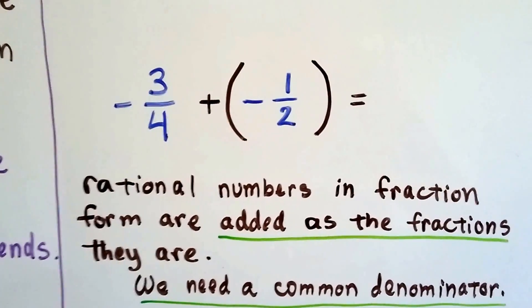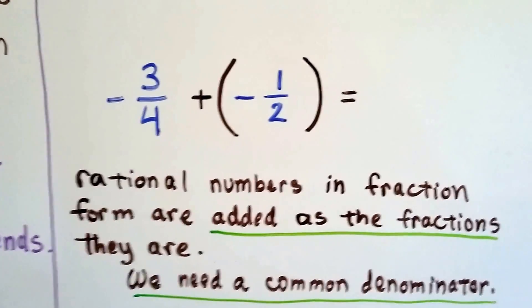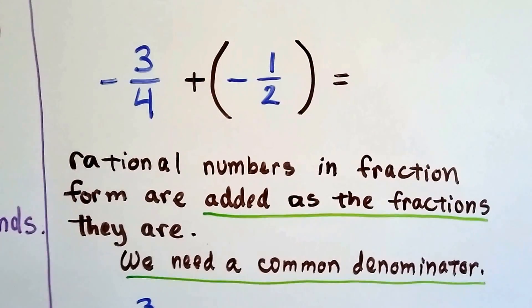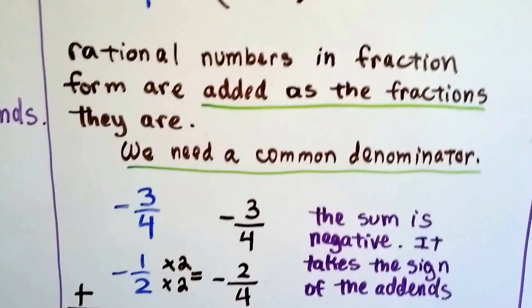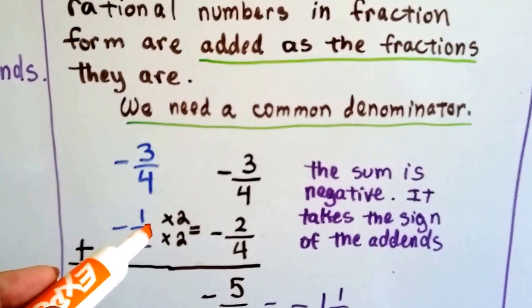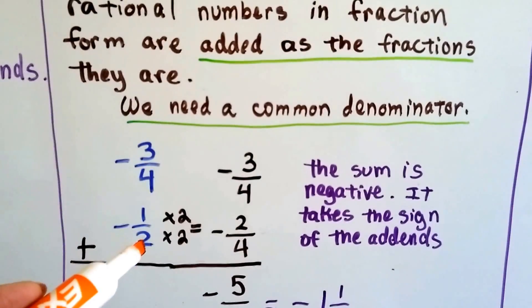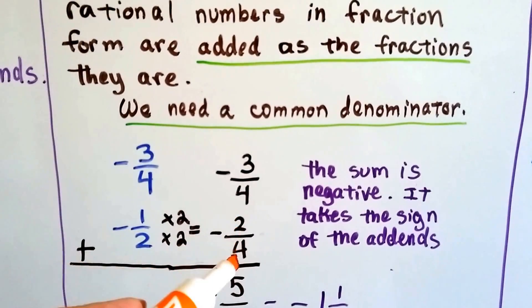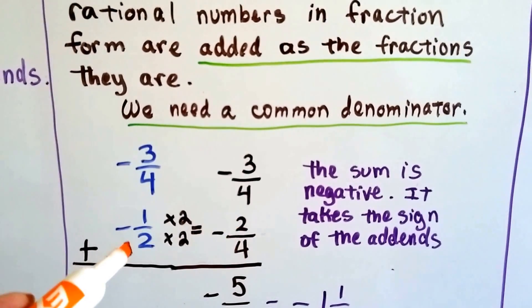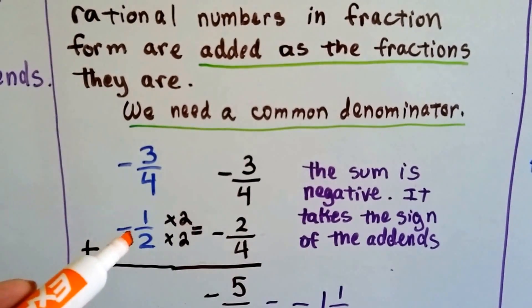All right, so here's two rational numbers in fraction form, and they're added as the fractions they are. We need a common denominator. We can't add halves and fourths. So in order for the half to become a fourth, we multiply it by 2. The numerator is jealous, it wants to get multiplied by 2.